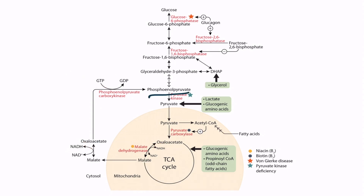From here, phosphoenolpyruvate is converted into fructose-1,6-bisphosphate through a series of reversible reactions. From glycolysis, you should recall that the conversion of fructose-6-phosphate to fructose-1,6-bisphosphate is irreversible, so gluconeogenesis must bypass this step. It does this by converting fructose-1,6-bisphosphate into fructose-6-phosphate through the enzyme fructose-1,6-bisphosphatase. Recall that glucagon decreases the concentration of fructose-2,6-bisphosphate, which releases the inhibition on fructose-1,6-bisphosphatase.